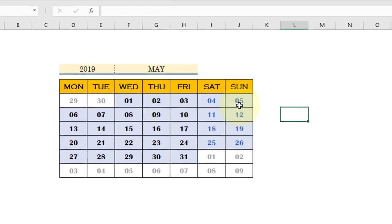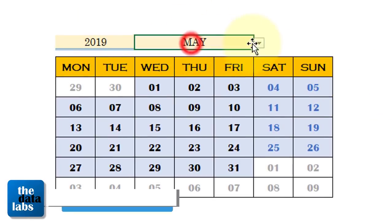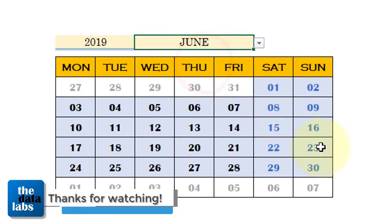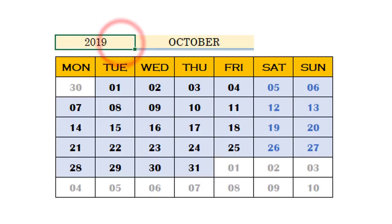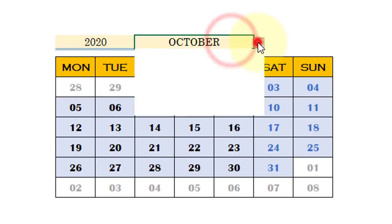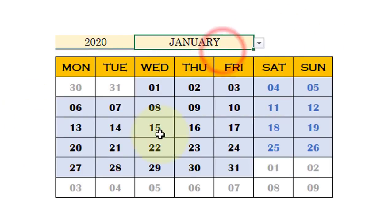The dynamic calendar is complete. Selecting June now shows the correct June calendar. Changing the year to 2020 and selecting January shows the January 2020 calendar correctly. This is a great way to create a calendar using simple basic Excel formulas and formatting. Hope you enjoyed this video — thank you for watching, please like, share, subscribe, and comment. Have a good day, bye!